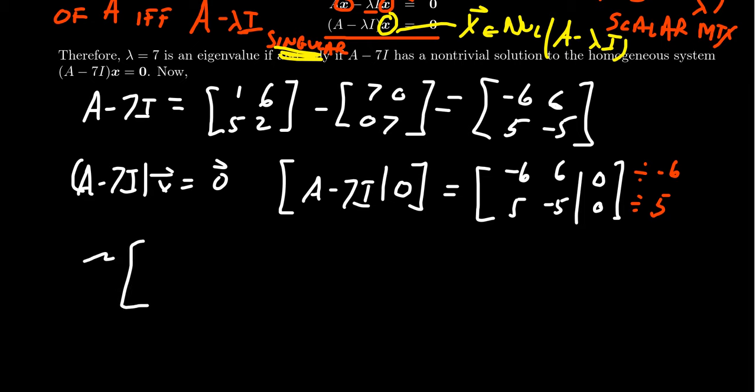And so if we do that, this will row reduce. The first one becomes [1, -1, 0]. The second row becomes [1, -1, 0]. And so you can see quite clearly here the two rows are identical. Just take row 2 minus row 1, and then this thing will row reduce to be [1, -1, 0] and then a row of [0, 0, 0].